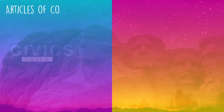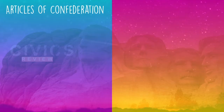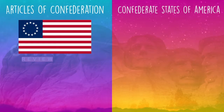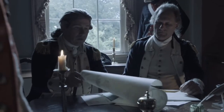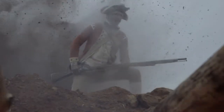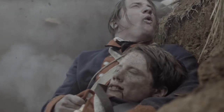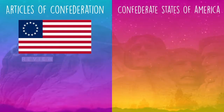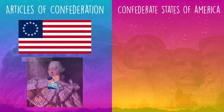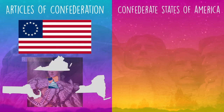Believe it or not, the United States of America has tried this system twice. The first time was the first time we made our own government — we called it the Articles of Confederation. We had just fought the Revolutionary War against the tyrant King George, and we were so afraid of that unitary state — that central government that has all of the power and sort of told the colonies what to do — but we didn't like that.